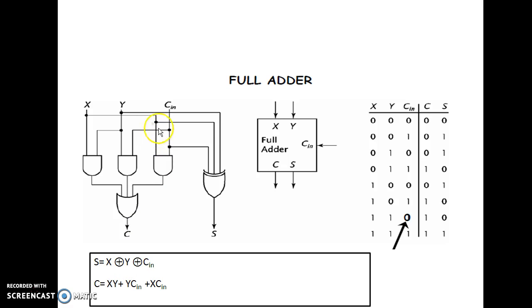Then the third term is x with cin. Now, the outputs of all these individual terms are given to the OR gate, and the output will give you the carry C.